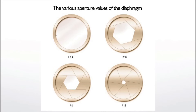Why does a bigger number mean a smaller aperture? Because it's a mathematical formula. If you divide 1 by 1.4, you get about 0.7 or 0.8 — that's the diameter of the aperture. If you divide 1 by 2.8, you get a smaller number because the diameter is smaller. If you divide 1 by 16, you get an even smaller number and a smaller hole. So: bigger number, smaller aperture.